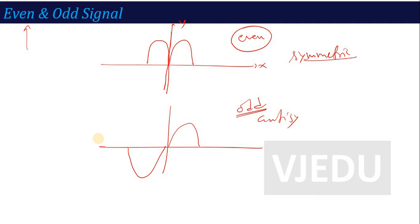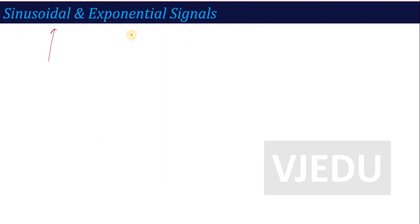From a definition standpoint, if a question asks what a signal is, what it represents, or what are the different types of signals used in electronics, engineering, or daily life — these are all the basic types: even, odd, deterministic, random, and the next category we will discuss: sinusoidal and exponential signals.